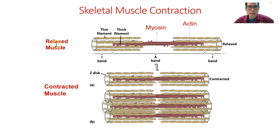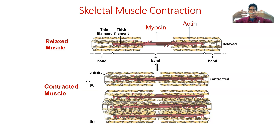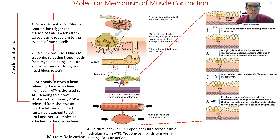In a relaxed muscle, the myosin and actin are far apart — there is a distance between them. During contraction, they move closer and closer together. Imagine the actin filaments sliding inward during contraction, then returning during relaxation. Of course, in reality this happens much more spontaneously. Let's now look at the molecular mechanism of muscle contraction.